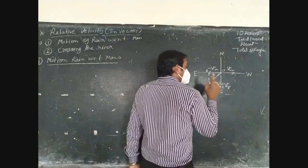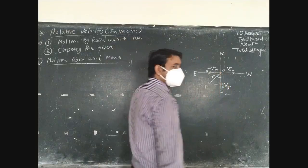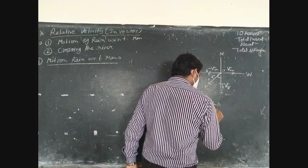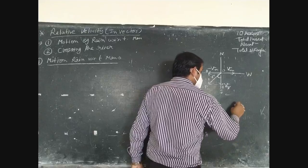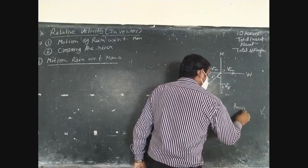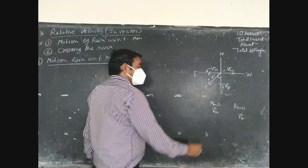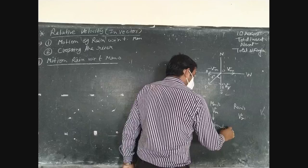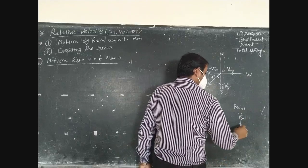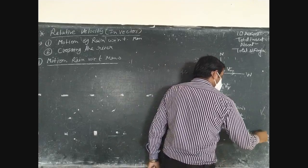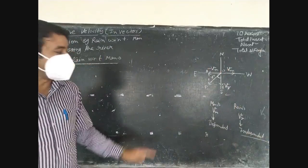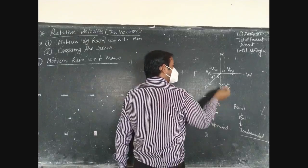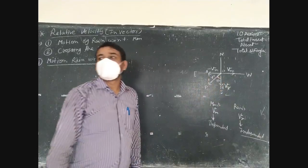Two types of velocity are taken: one is man's velocity as Vm, and another is rain's velocity as Vr. The velocity of man is dependent, and the velocity of rain is independent. So always remember, when we find the direction, it is always taken in the direction of the independent physical quantity — rain is independent, so take the direction of the resultant with the rain.